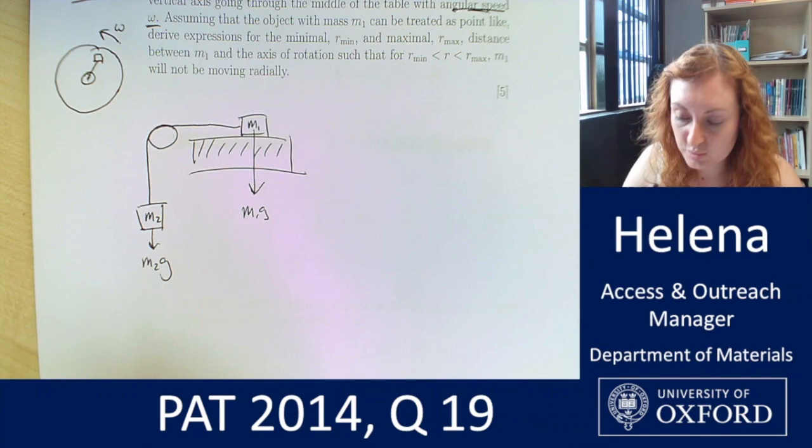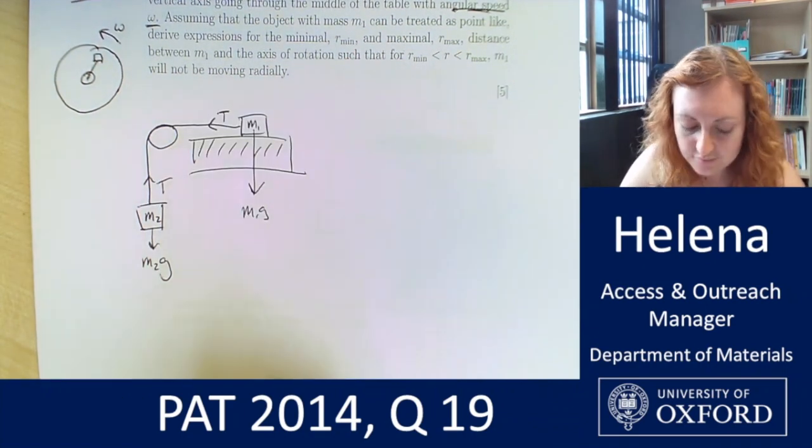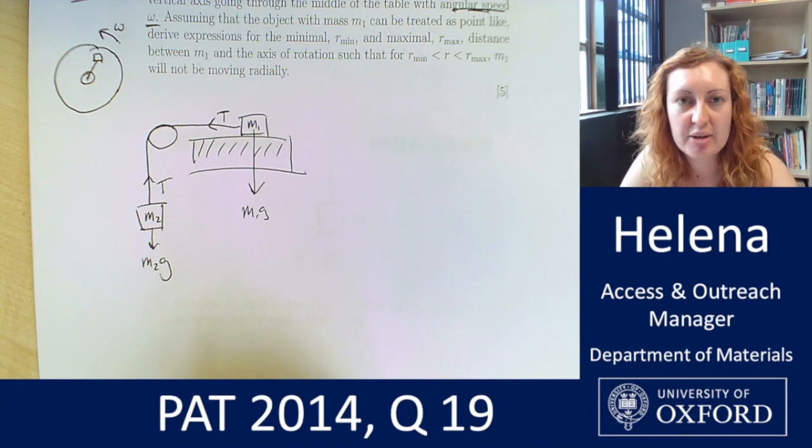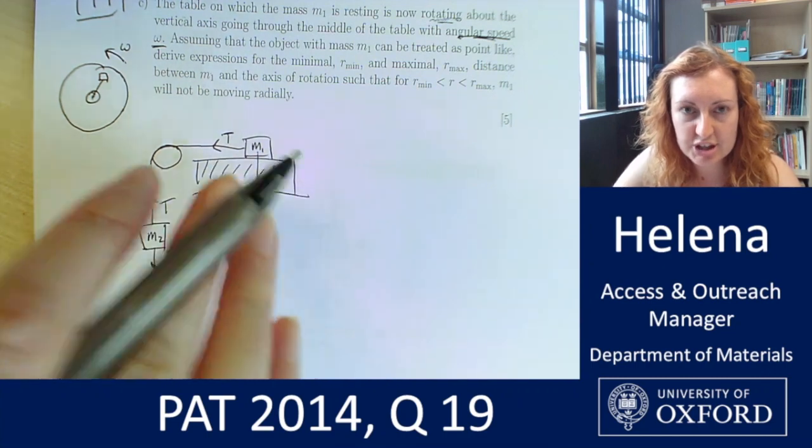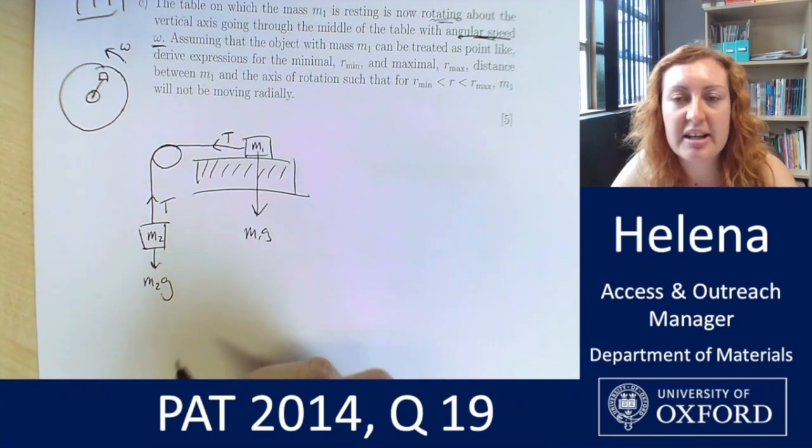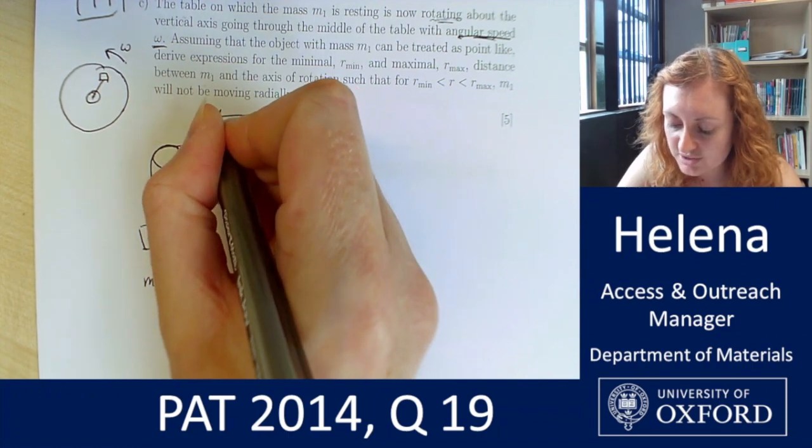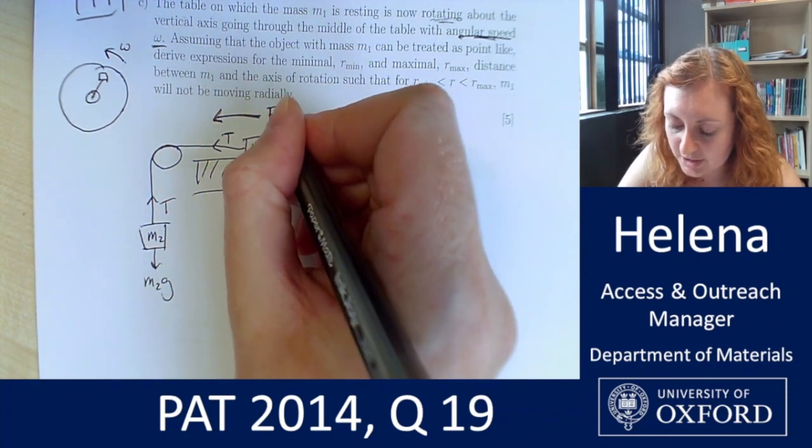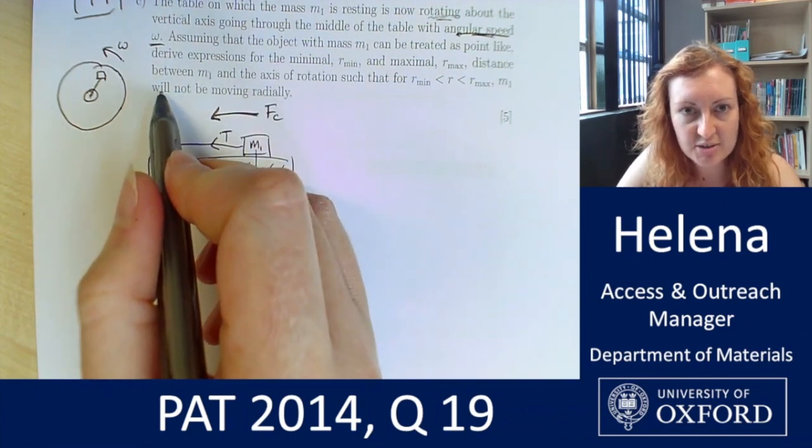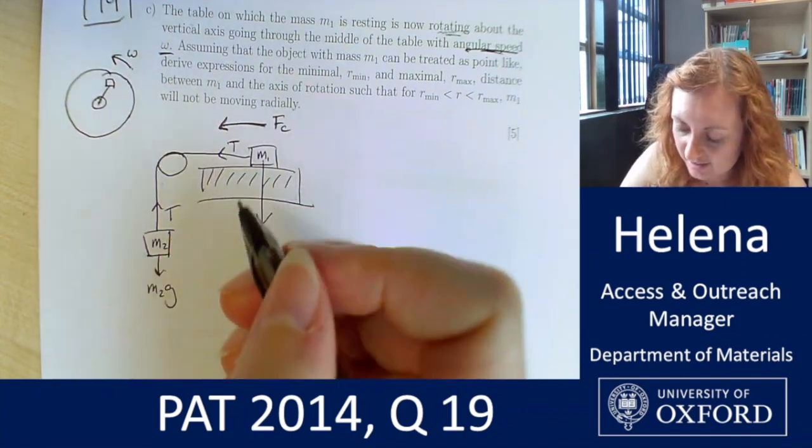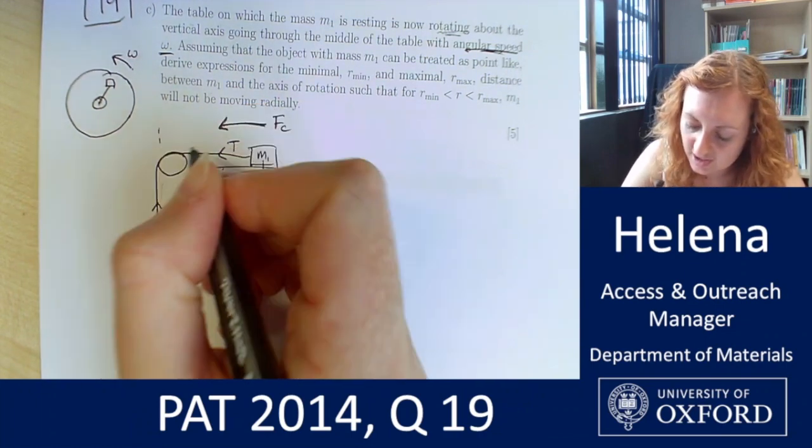We still have our string tension. However, now because we've got a rotating table, so remember the direction that it's rotating in, so we're kind of pushing this into the plane of the paper in its rotation. We now have a resultant force because of that circular motion acting to the center of that rotation, so this central point here. And we've got a distance R.